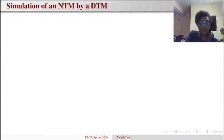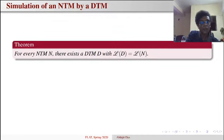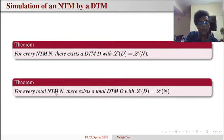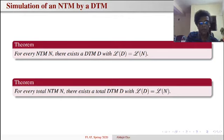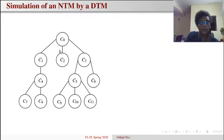Now let us see how a deterministic Turing machine D can simulate a non-deterministic Turing machine N. Theorem: For every NTM N, there exists a DTM D such that the language of D equals the language of N. Moreover, for every total NTM N, there exists a total DTM D such that the language of D equals the language of N. Only one conversion process suffices for both cases.